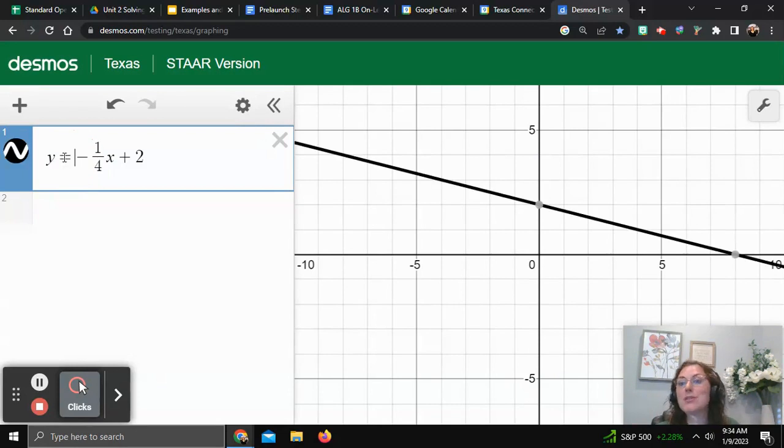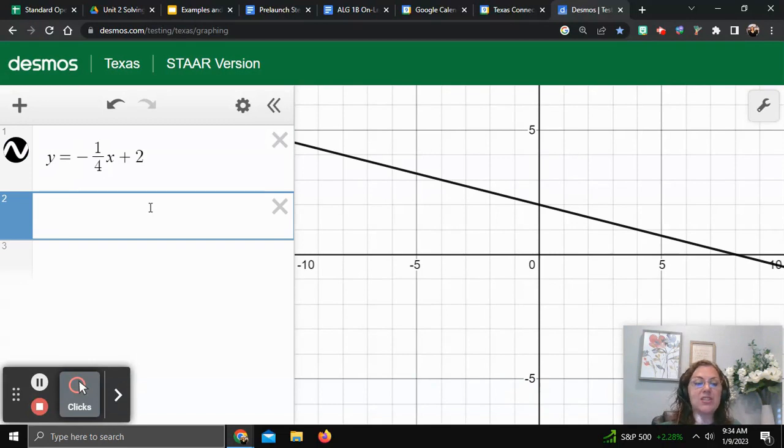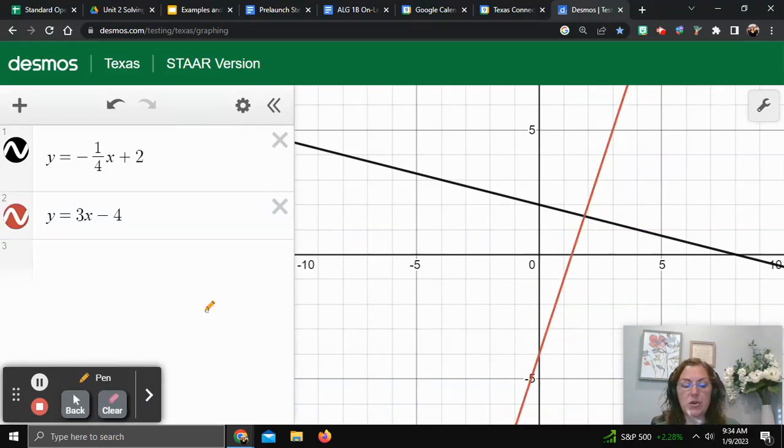Then I'll put in the other inequality, but since I already know Desmos won't graph it, I'm just going to change it to an equal sign so we can take a look at the actual graph. Now I have to deal with the inequalities part.